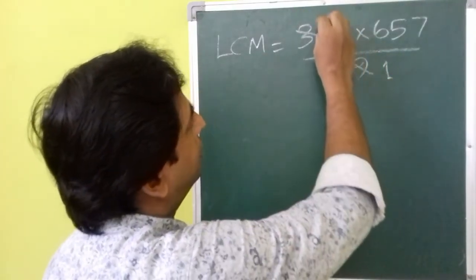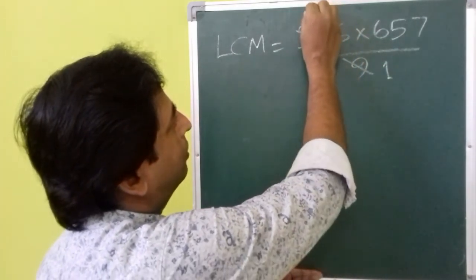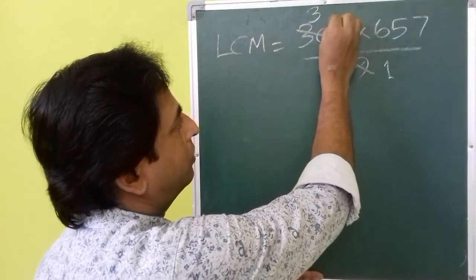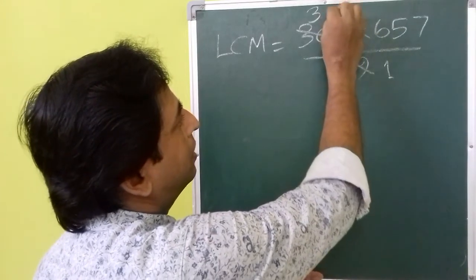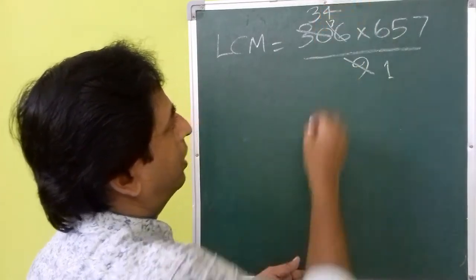So 9 will go one time in this, and in 30 it will go 3 times, that is 27, and the balance of 3. That means 36, it will go 4 times. That means we have 657 multiplied by 34.